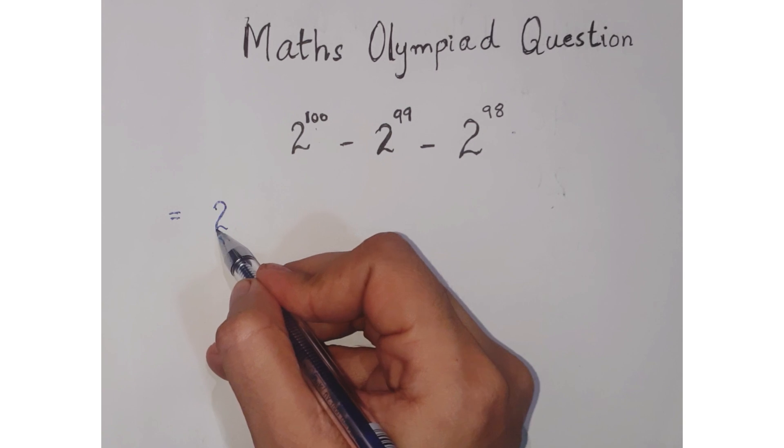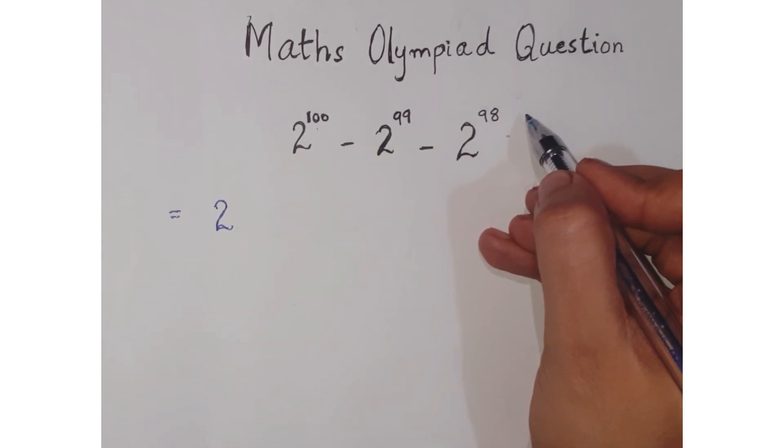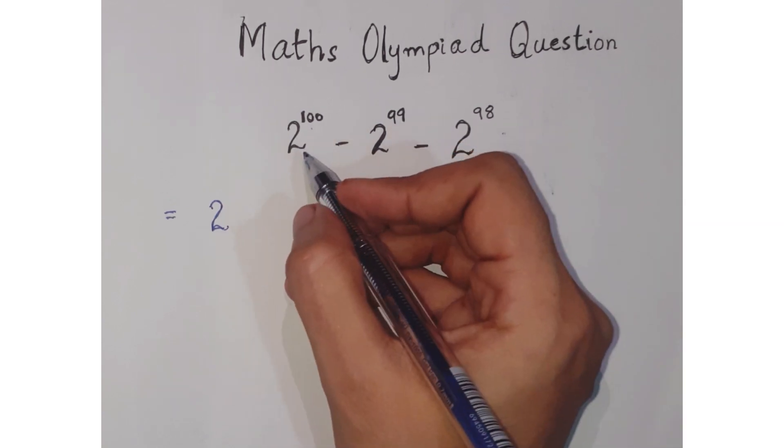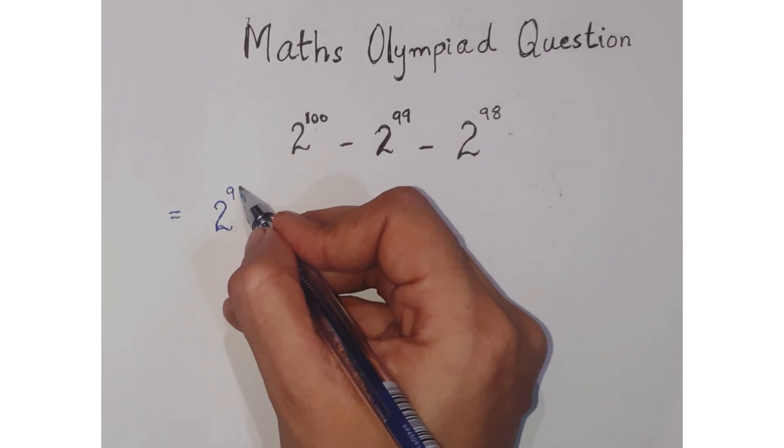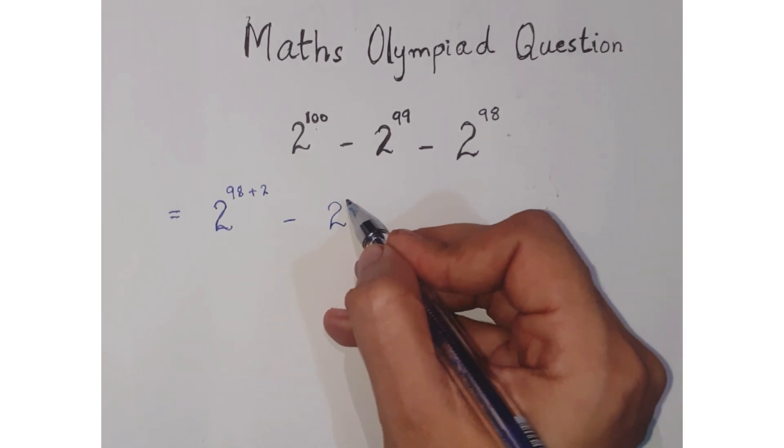How we will split 100? We will split 100 into 98 plus 2 minus 2 raised to the power 98 plus 1 minus 2 raised to the power 98.